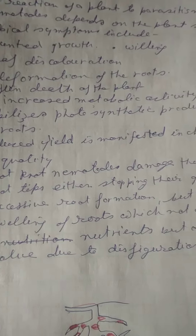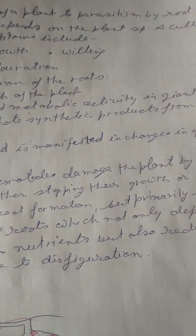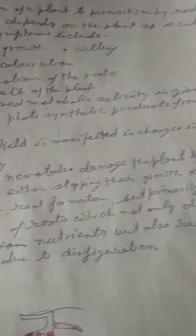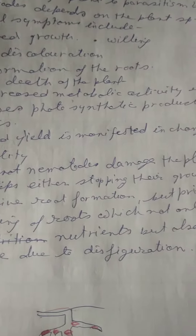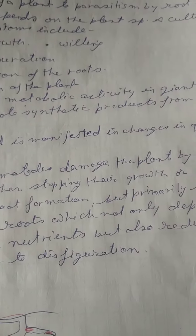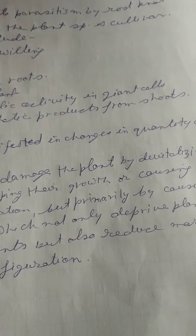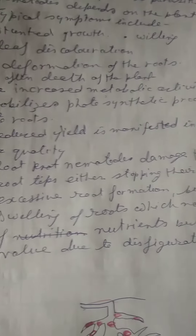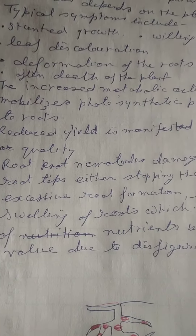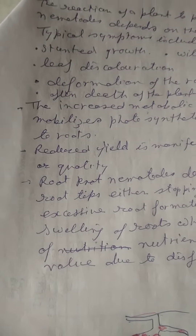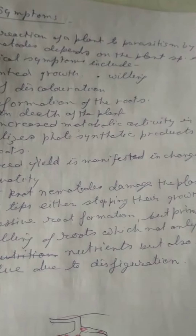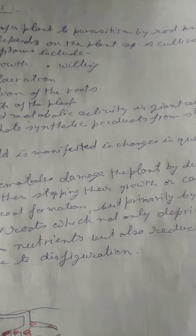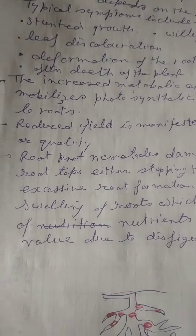It also increases the metabolic activity in giant cells. It mobilizes photosynthetic products from shoot to the roots. It reduces the yield and is manifested in changes in quantity and quality.